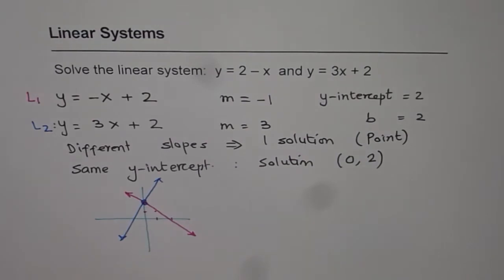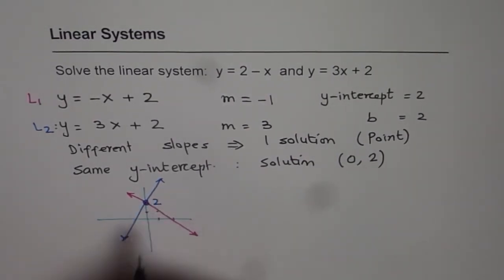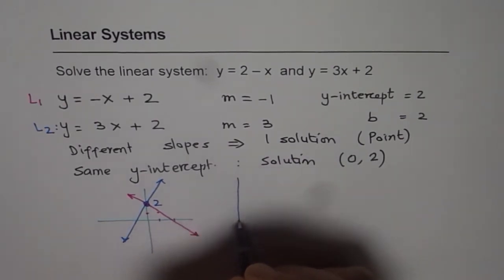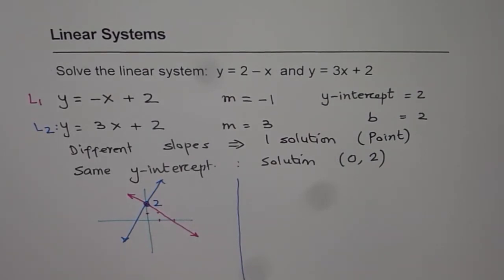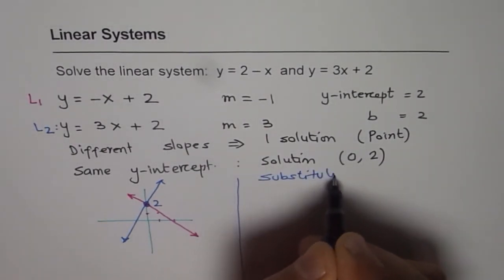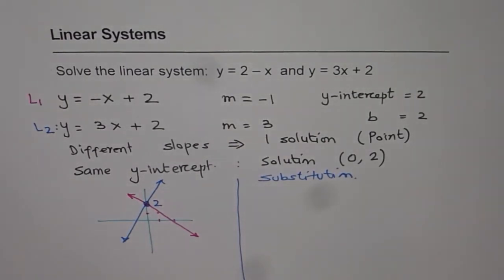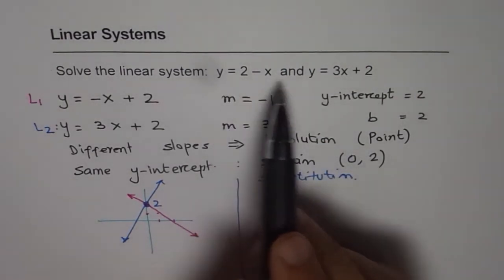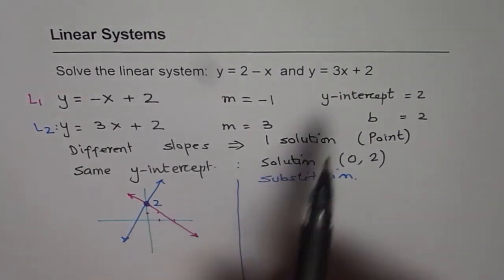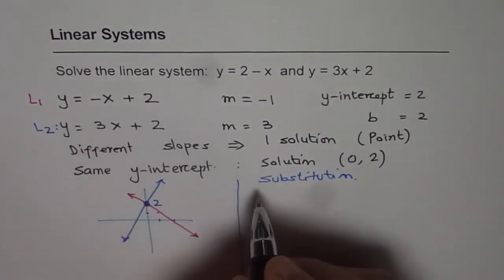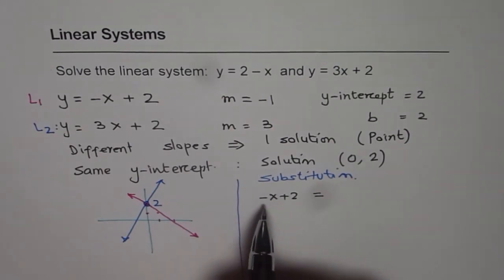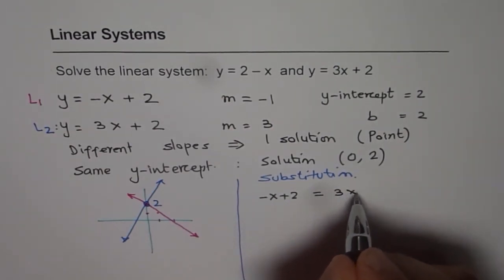From the graph, you can see that the two lines intersect at the y-intercept itself, which is at 2 — that becomes the solution. Another method to solve this is substitution. Since both equations express y, we can equate them: minus x plus 2 equals 3x plus 2.